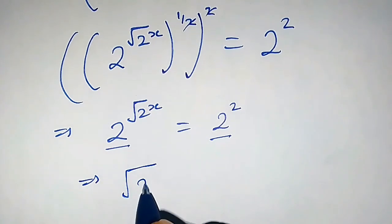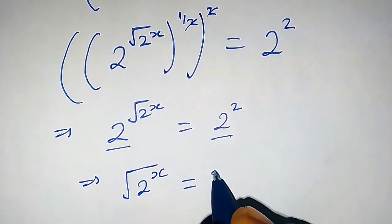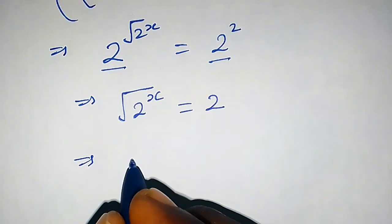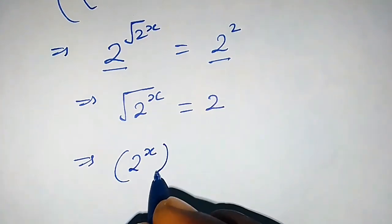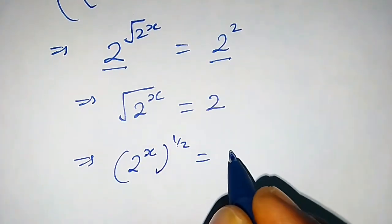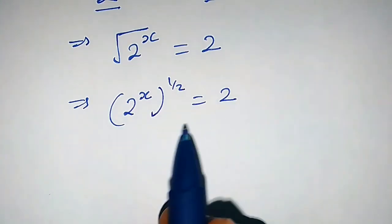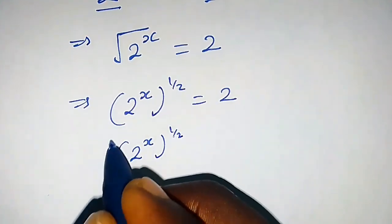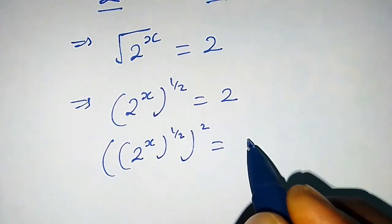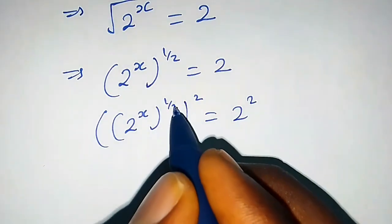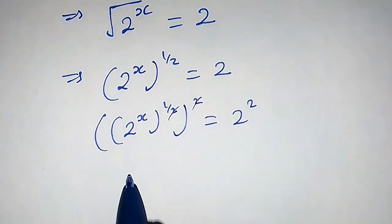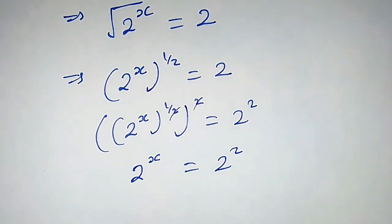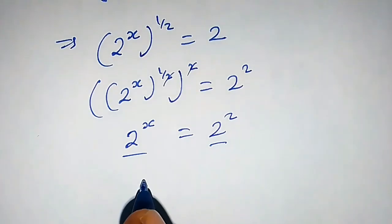Since the bases are equal, this implies that square root of 2 raised by x equals 2. We can write this as 2 raised by x times one-half, so this equals 2. Squaring both sides again gives us 2 raised by x times one-half times 2 equals 2 squared. The halves cancel, leaving us with 2 raised by x equals 2 squared.